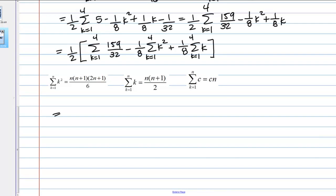Let's review what those formulas are. Here are the summation formulas, and we can just go ahead and apply them. The first thing I have here is the sum of the constant, 159 over 32. That's this rule here. It's just that constant times N, and N is 4. 159 over 32 times 4, minus 1/8, and then k squared with N equals 4. N is 4, N plus 1 is 5, 2N plus 1 is 9, and that's all over 6, plus 1/8, and then the sum of k. K is here, so 4 times 5 over 2.